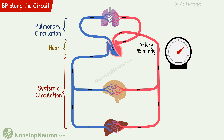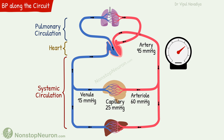The left heart pumps blood into the systemic arteries, which have a pressure of about 95 mmHg. In arterioles, the pressure drops to 60 mmHg. In capillaries, it's 25 mmHg. In venules, it's 15 mmHg. And in veins, it drops from 15 to 3 mmHg.